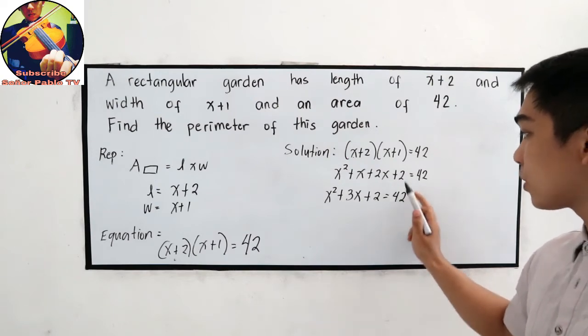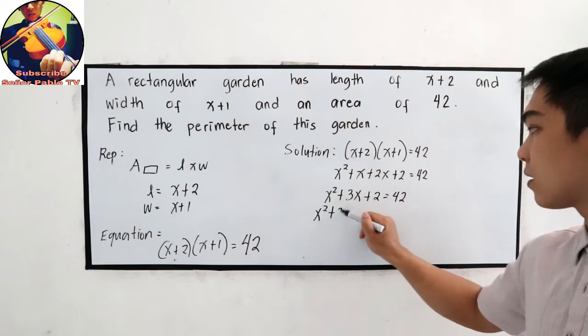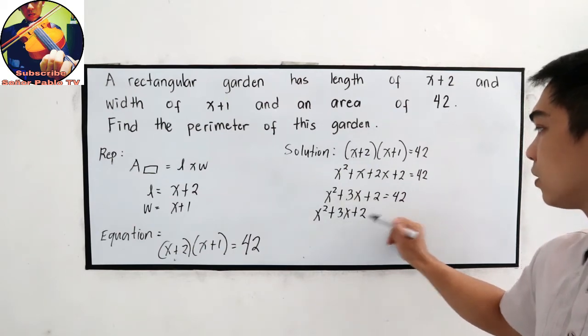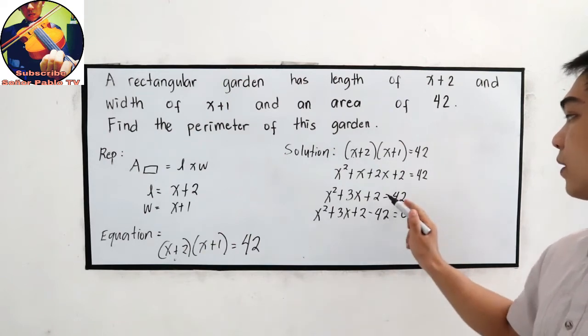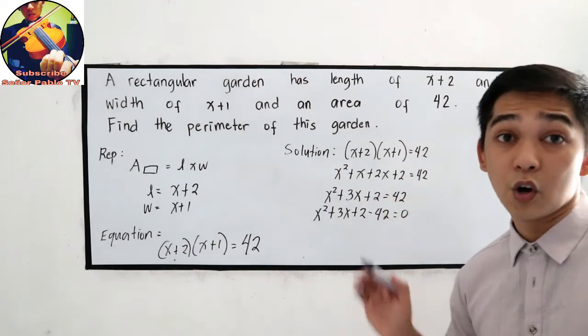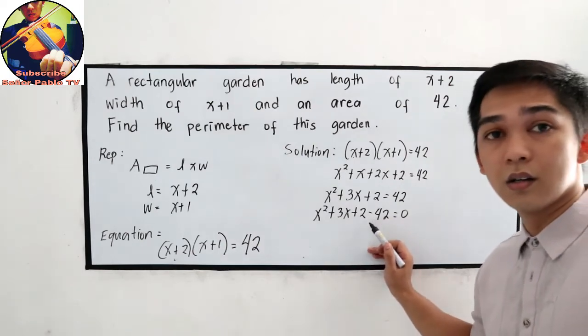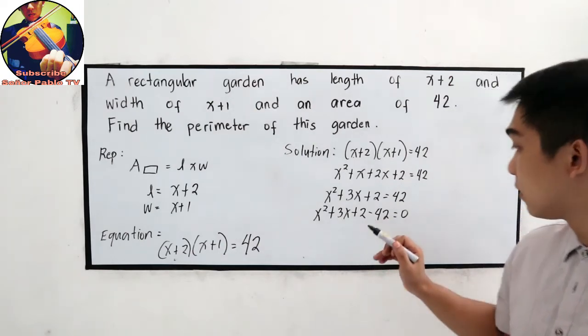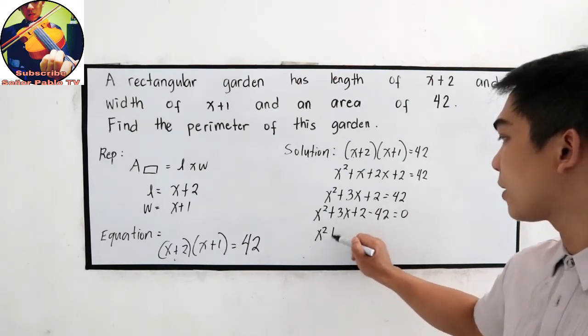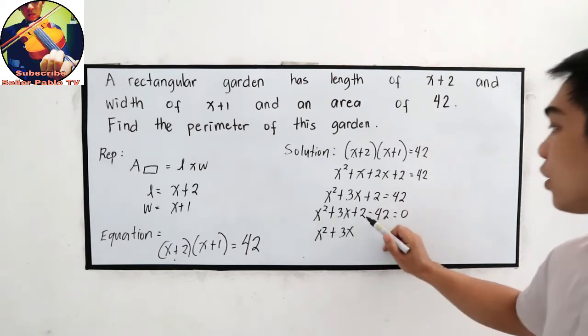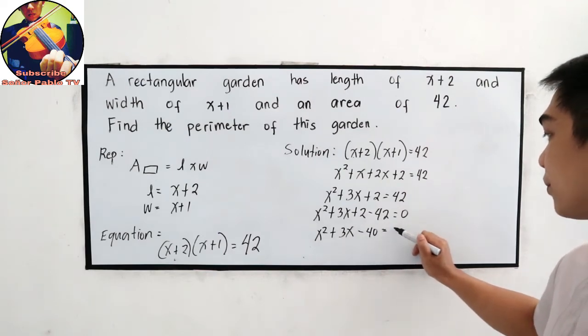Let us transpose 42 on the left side. So we have x squared plus 3x plus 2 minus 42 is equal to 0. Don't forget, if you're going to transpose one number, you need to change the sign. Now let us combine like terms. x squared plus 3x, 2 minus 42, negative 40 is equal to 0.